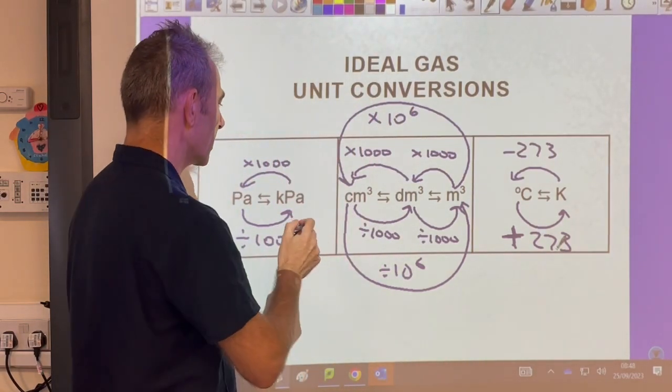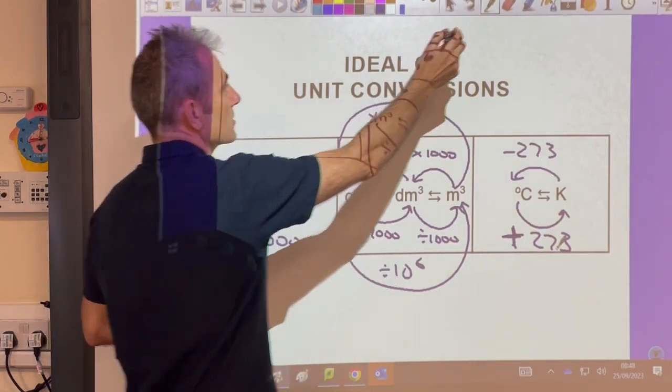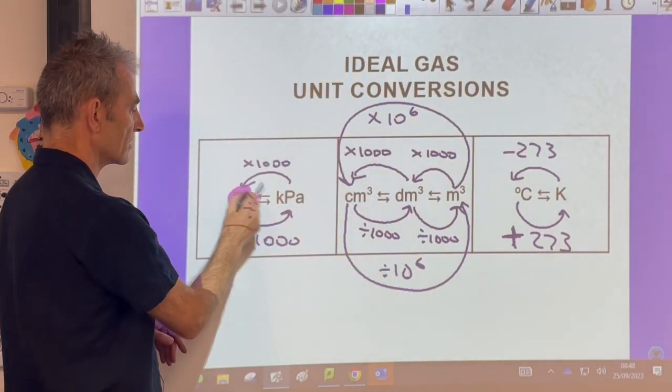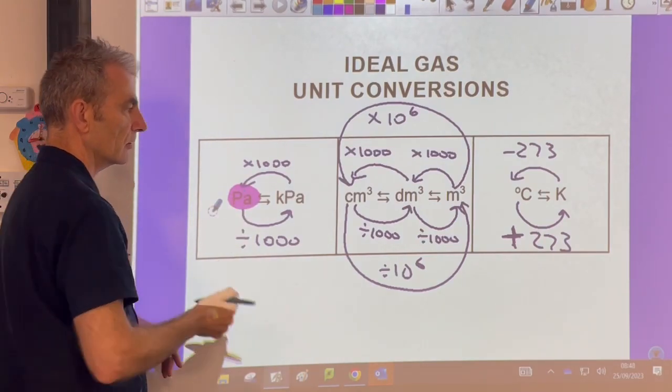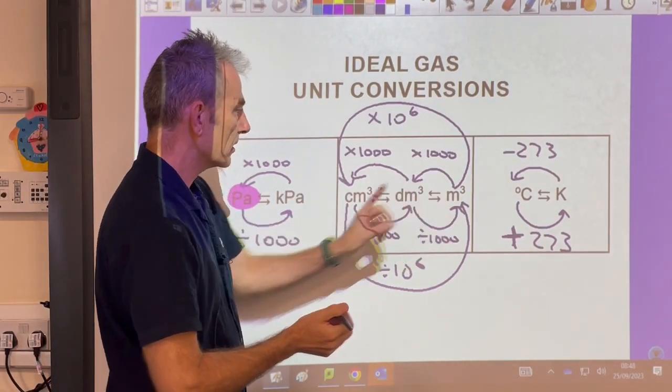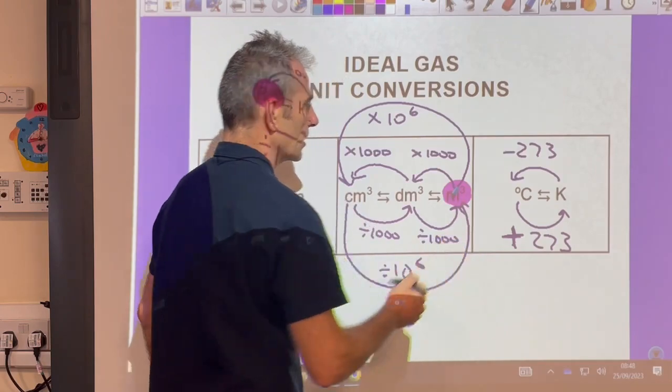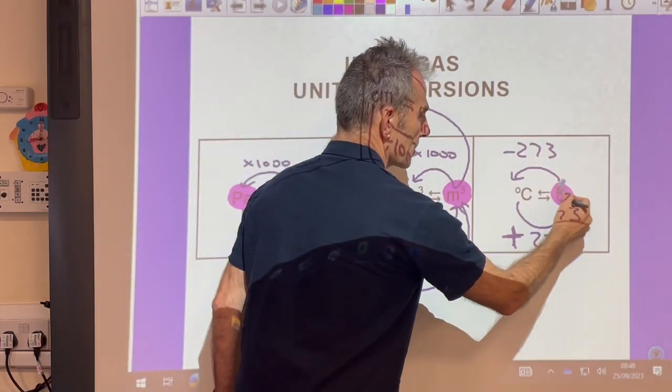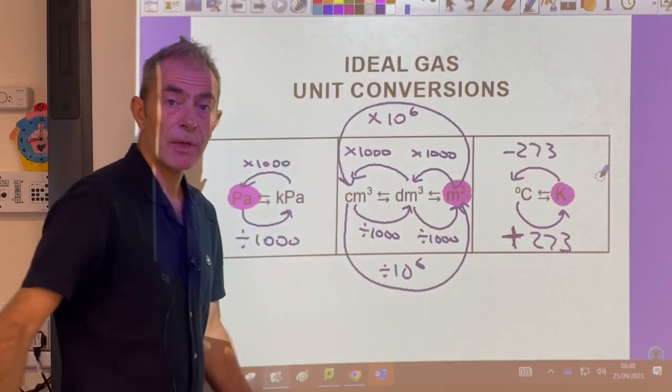We'll finish by saying what the units are for the ideal gas equation. The unit of pressure in the ideal gas equation is pascals, the unit of volume is meters cubed, and the unit of temperature is Kelvin. Hope that was helpful.